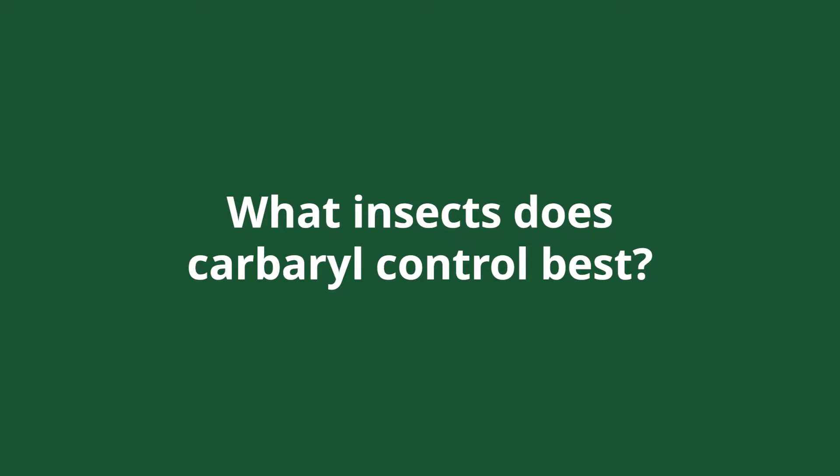Hi, I'm Nikki Hendrickson with Advanced Turf Solutions and today we're going to talk about the active ingredient Carbaryl. Carbaryl is a broad-spectrum insecticide. There's pretty much every insect around that's probably on that label, from your soft-bodied insects — things like aphids and whiteflies — to beetles, and even to some insect relatives like spiders and ticks.